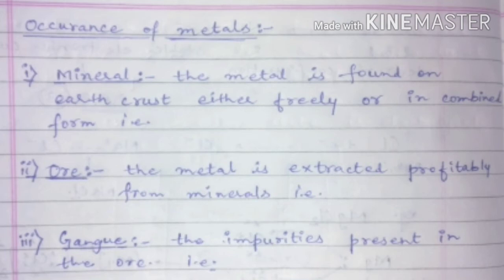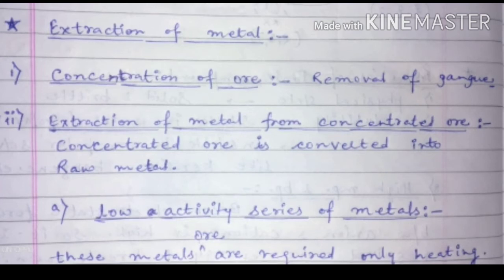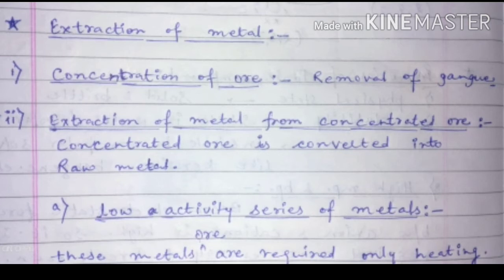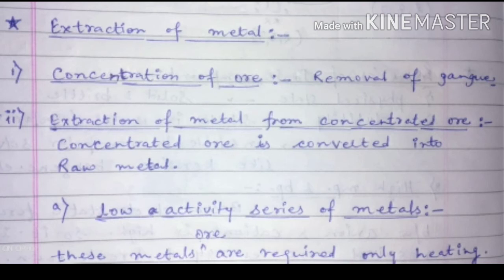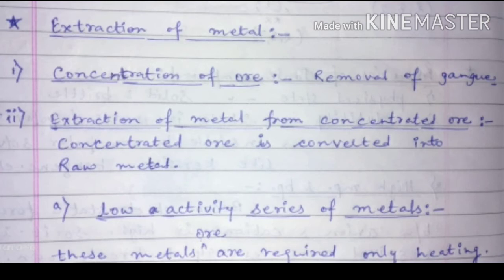Our next topic is the extraction of metal — how we can extract metal from their ores. The first process of extraction is concentration of ore. In this process we take the ore and remove the gangue. After this process, what we get is known as concentrated ore.